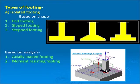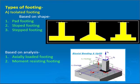In this diagram, since the column is placed at some eccentricity with respect to both the x-axis and y-axis, we have moment Mx and moment My. Because of these two moments, the footing is subjected to different pressures at each corner — p1, p2, p3, and p4. This is called a footing subjected to biaxial bending.